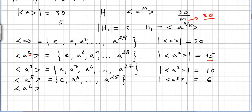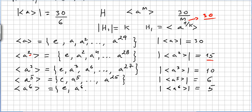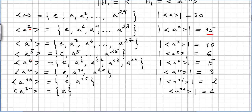A to the power of 6: 6 divides 30, and 30 divided by 6 is 5, since 5 times 6 is 30. So this will be the identity, A to the power of 6, A to the power of 12, 18, 24 — done. That gives 5 elements, so the order of ⟨A⁶⟩ is 5.